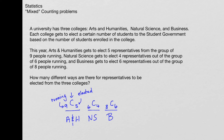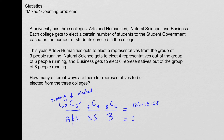I'll compute each of these values separately and then multiply them together. 9C5 gives 126 different ways for people to be elected from arts and humanities. 6C4 turns out to be 15 for natural science, and 8C6 turns out to be 28 for business. Multiplying those three numbers together gives 52,920, and that's the final answer.